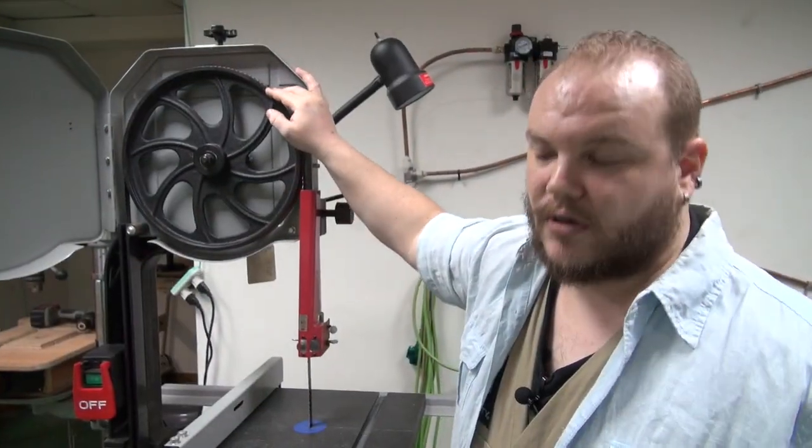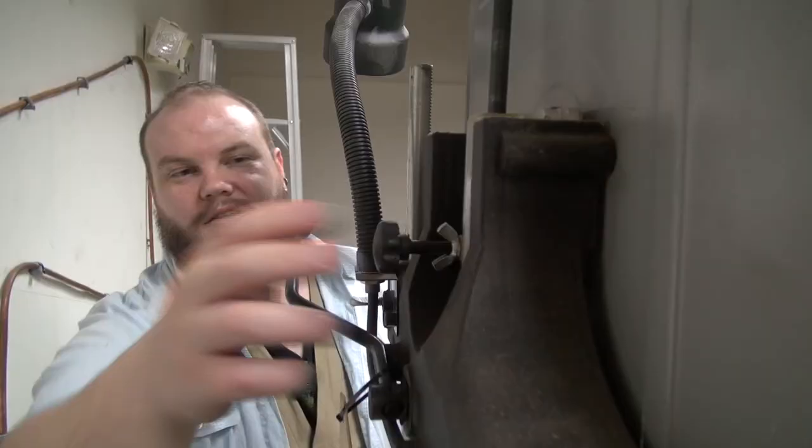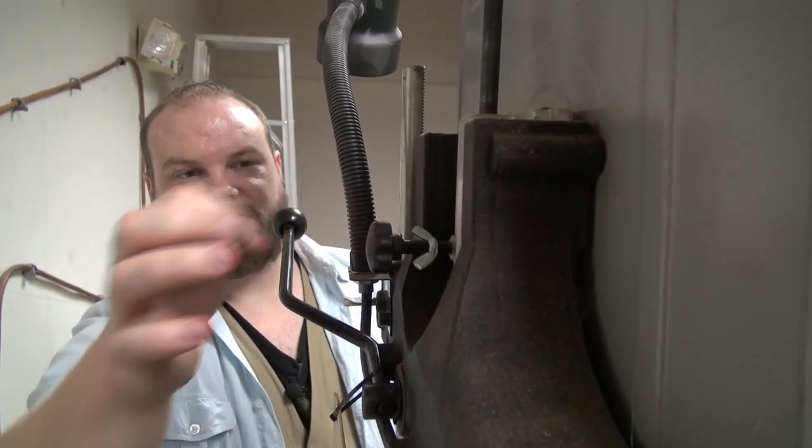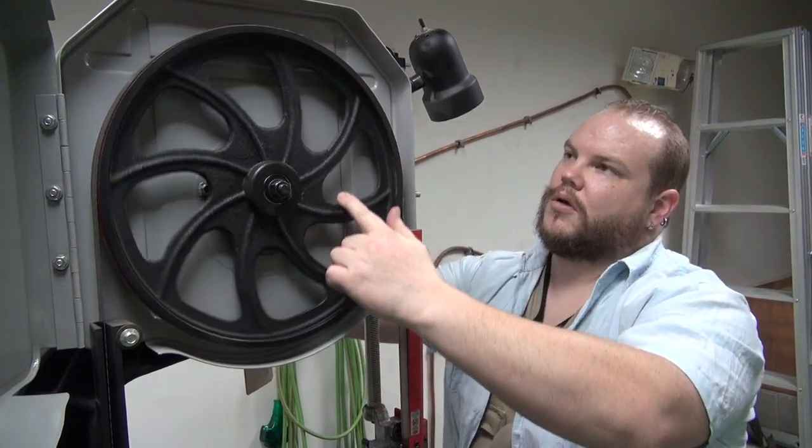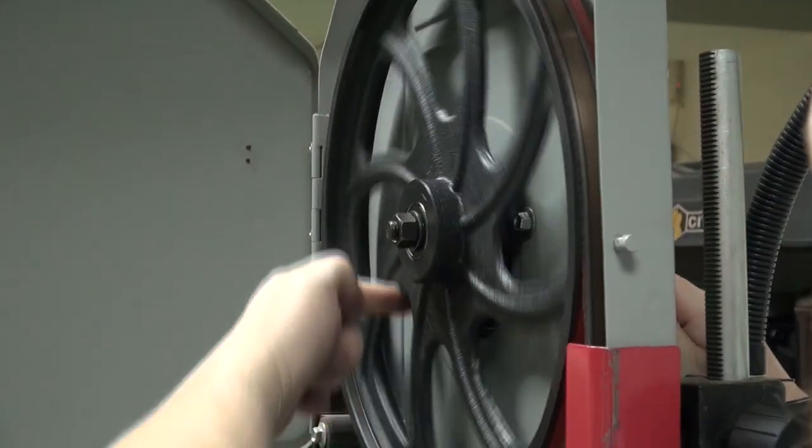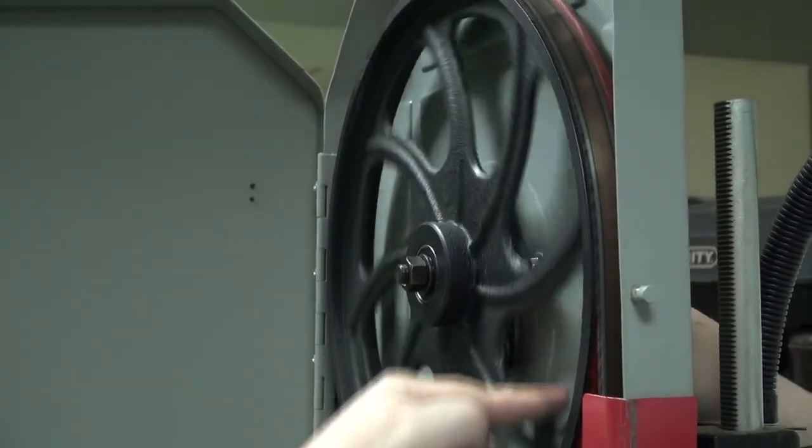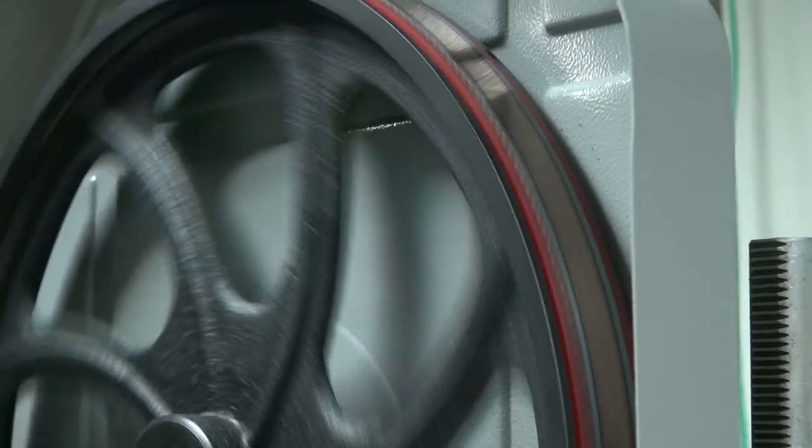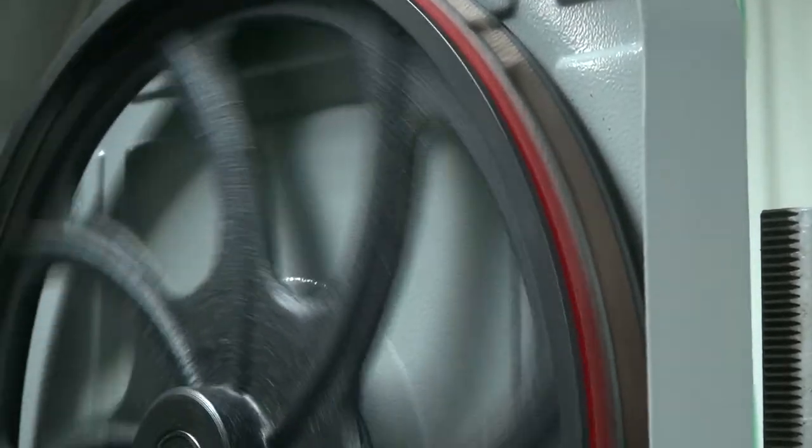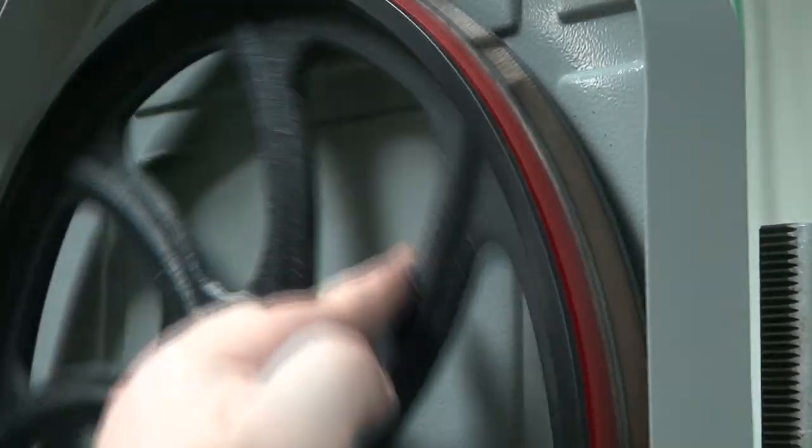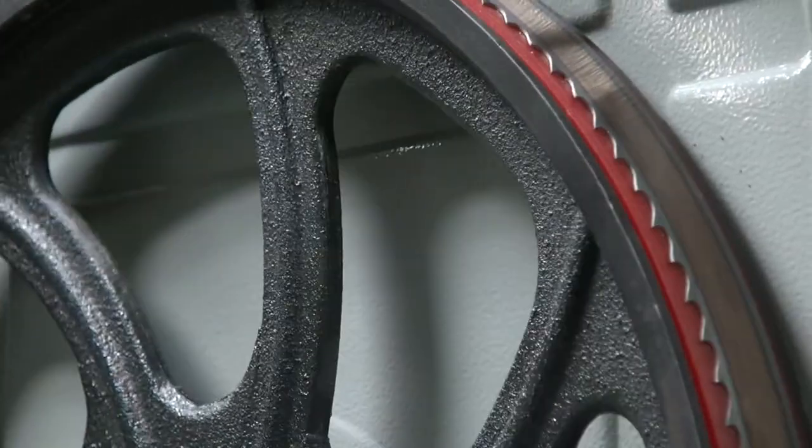The tracking adjustment, as it always is, is at the back here. Just loosen off your wing nut. Slowly turn the wheel whilst making your tracking adjustment until the blade is essentially in the center of the wheel. With a three-quarter inch blade like this, you might want to go a little more towards the back. Right about there.